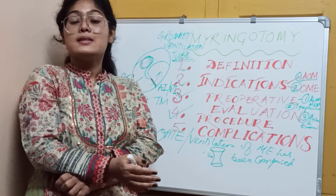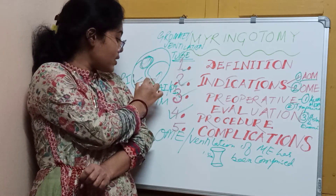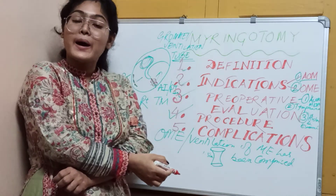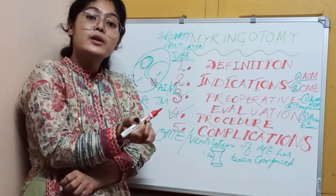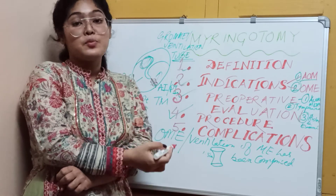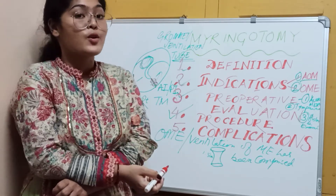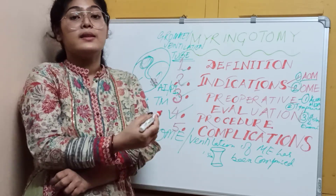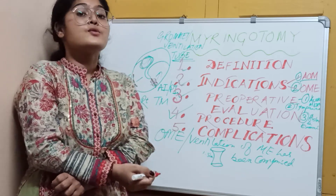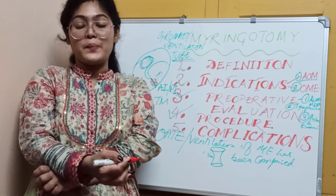The fourth complication involves the grommet itself. Supposing the grommet has been placed — it might intrude inside the middle ear, or it might extrude into the external auditory canal. That is called early extrusion. These are the main complications of Myringotomy.